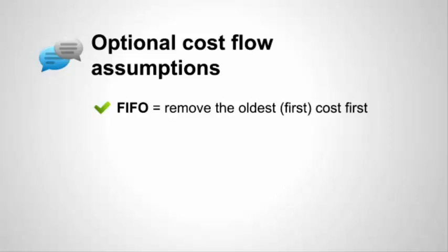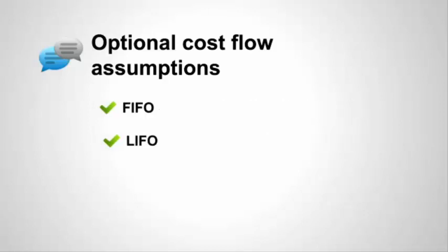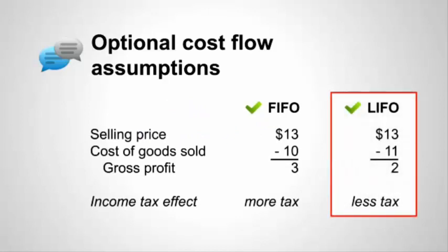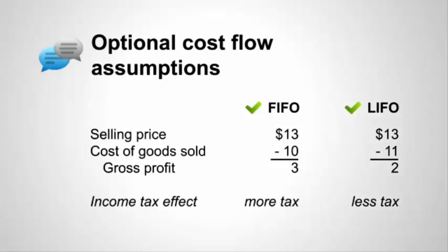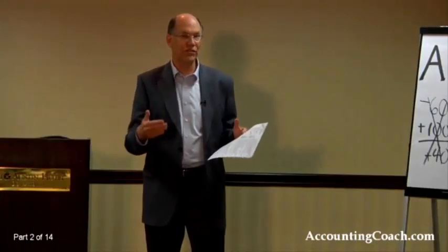There's also a second option called LIFO — you take the last cost that came in and send it out first. During periods of inflation, many businesses adopt LIFO for income tax purposes. The entrepreneur would say: if I have a choice between putting $10 or $11 on the tax return, I'll put $11 — then I'm only taxed on $2 of profit instead of $3. So LIFO helps conserve cash by reducing taxable income.